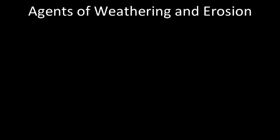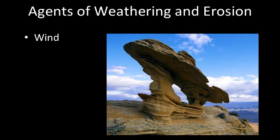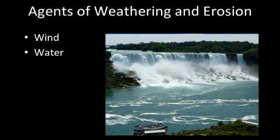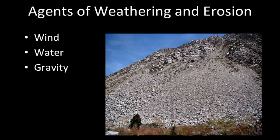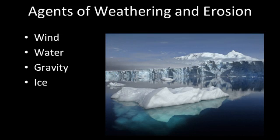What are the agents of weathering and erosion — meaning what causes them to happen? First is wind: when wind blows rocks across a desert environment, rocks smash into rocks and break up. Then there's water, which causes weathering and erosion in several ways. There's also gravity — rocks rolling down a hill — and ice, which can cause weathering and erosion in a couple of different ways.